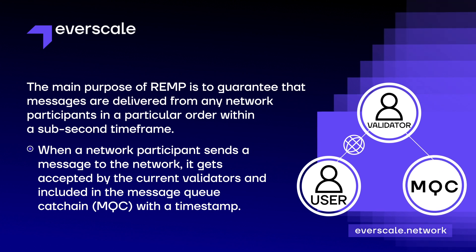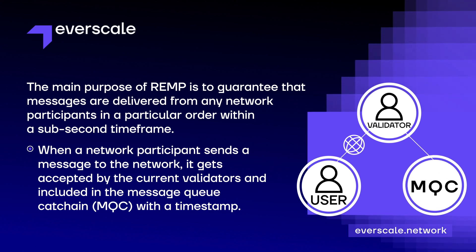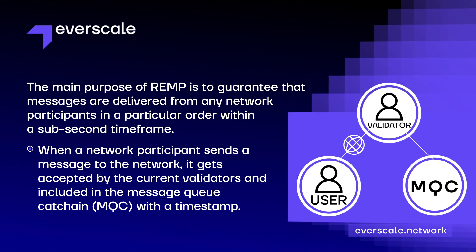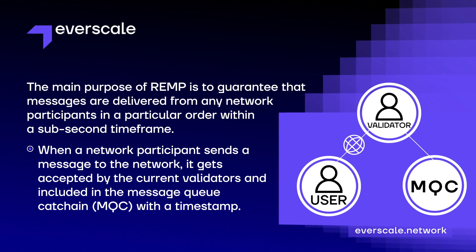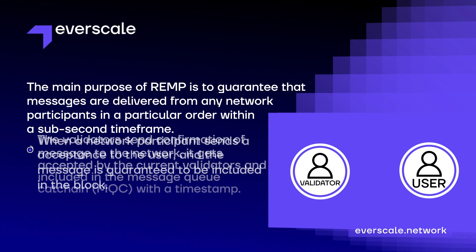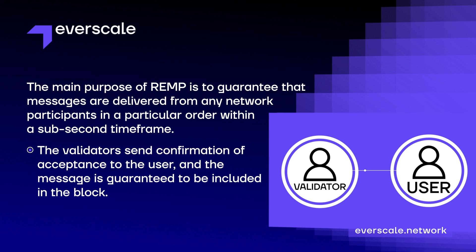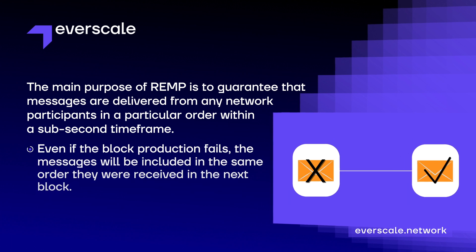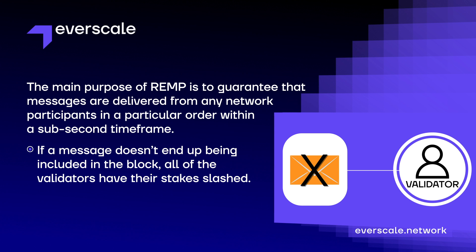How REMP changes the game. The main purpose of REMP is to guarantee that messages are delivered from any network participants in a particular order within a sub-second time frame. When a network participant sends a message to the network, it gets accepted by the current validators and included in the message queue, cat chain (MQC), with a timestamp. The validators send confirmation of acceptance to the user and the message is guaranteed to be included in the block. Even if the block production fails, the messages will be included in the same order they were received in the next block. If a message doesn't end up being included in the block, all of the validators have their stakes slashed.